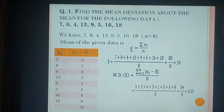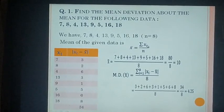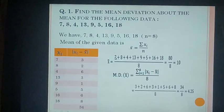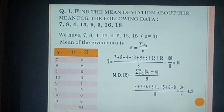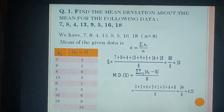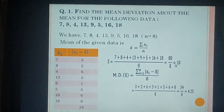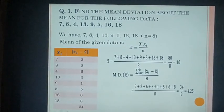The formula is x̄ = Σxi / n. Σxi is the sum of all observations: 7 + 8 + 4 + 13 + 9 + 5 + 16 + 18, divided by 8. That gives 80 / 8 = 10. So x̄ = 10.